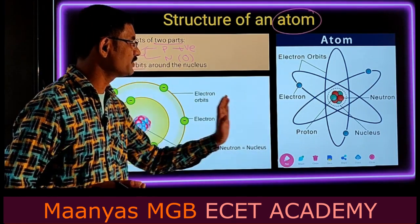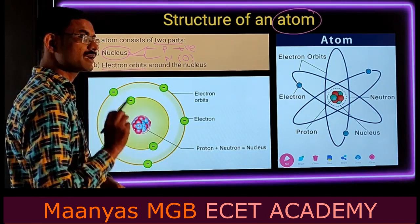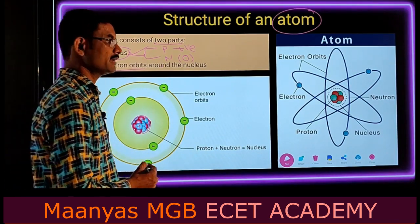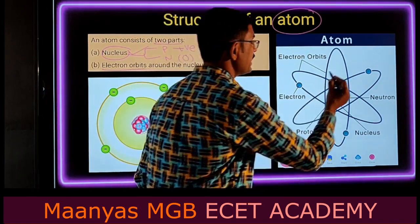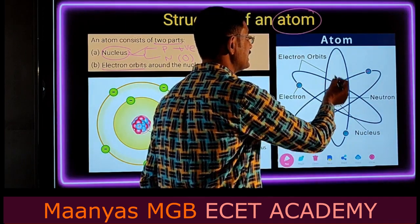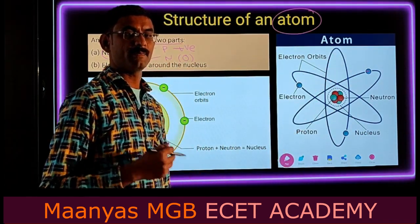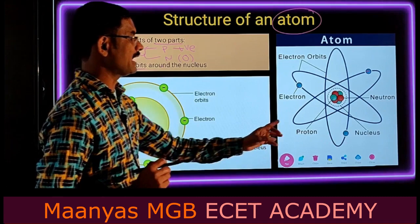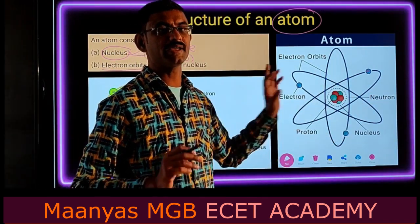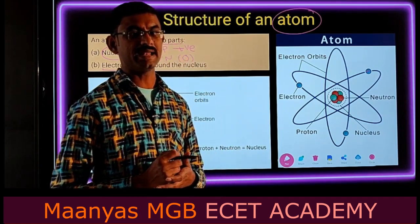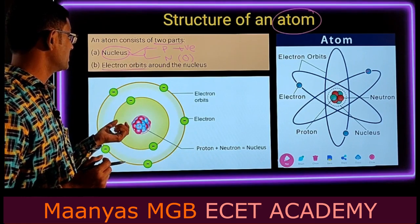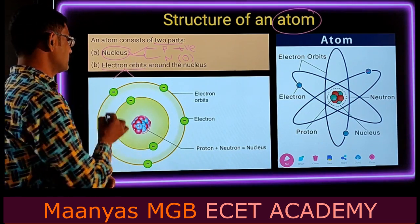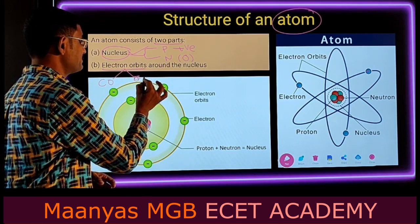Looking at the two diagrams: in the first representation, the negatively charged particles called electrons revolve around the nucleus in a circular path. But in the second representation, the negatively charged particles revolve around the nucleus in elliptical paths. So the electron orbits can be divided into two types: the first one is circular orbits, and the second one is elliptical orbits.